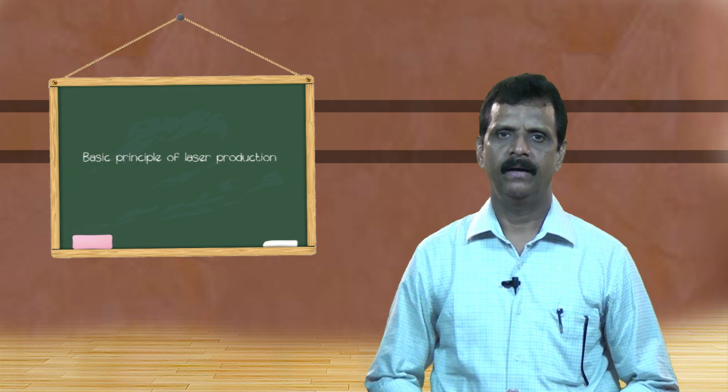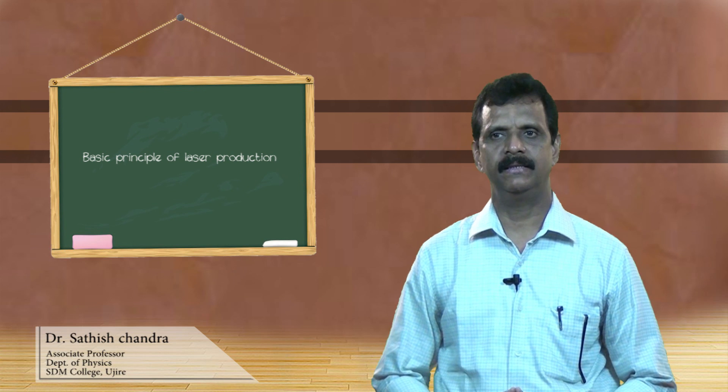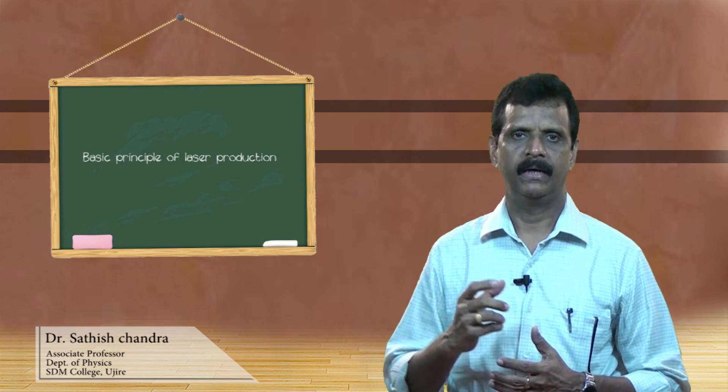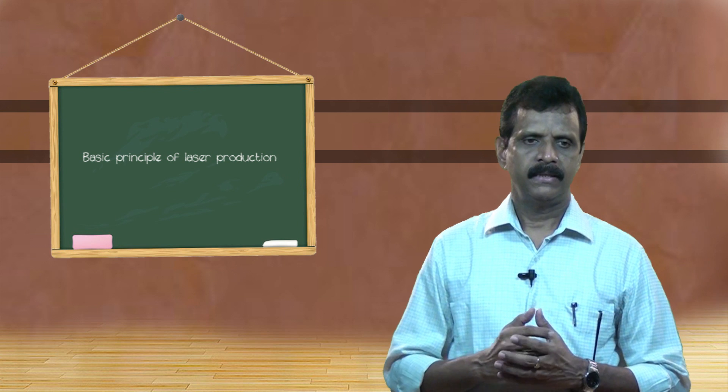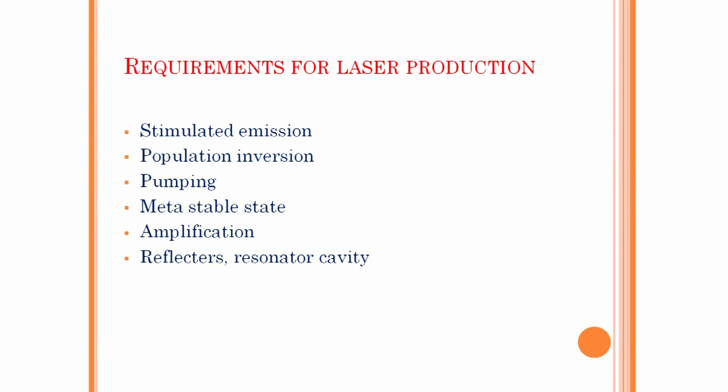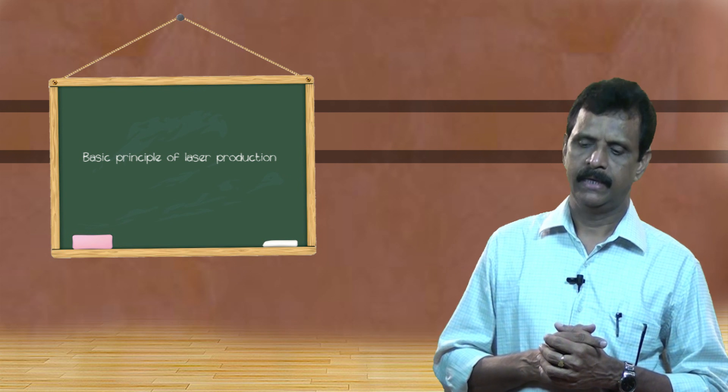Today we will discuss how laser is produced, or what are the basic requirements to produce laser. As the very name suggests, it is the stimulated emission which plays a very important role in the production of laser. So besides stimulated emission, the other basic processes involved are population inversion, pumping, metastable state, amplification, reflectors, and resonator cavity.